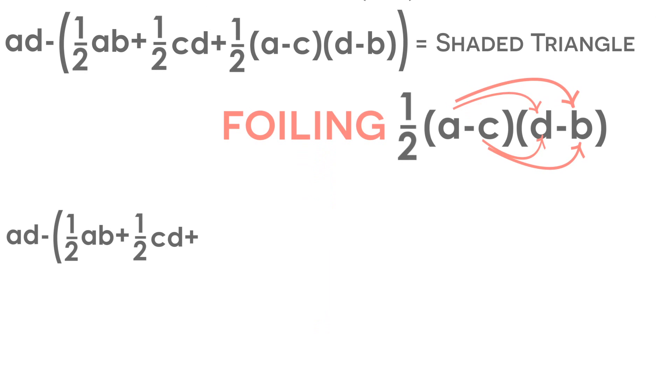And after we do this, we're going to have one-half AD, negative one-half AB, negative one-half CD, and one-half BC.